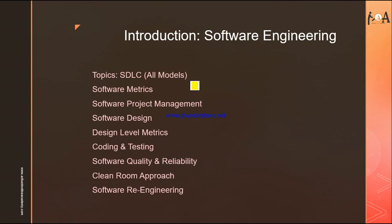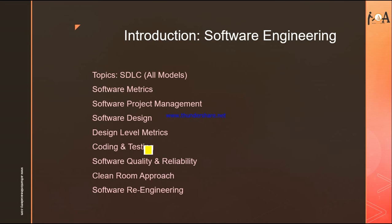The major topics covered under software engineering for every exam and engineering course are: SDLC — Software Development Lifecycle (or System Development Lifecycle) — in which we discuss all models; software metrics; software project management; system design and software design; system design level metrics; coding and testing — including black box, gray box, and all kinds of testing; software quality and reliability; clean room approach; and software re-engineering. Several methods, designing principles, formulas, and various approaches will all be discussed topic by topic.